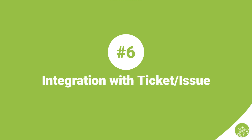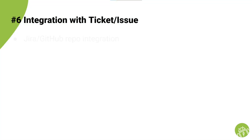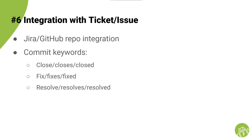Number six: integration with tickets and issues. GitHub issues or Jira tickets come with repo integration, which means you can refer to their IDs and they get informed which commit is related to the issue or ticket. You can also go further with integration and use keywords like 'fix' or 'close' to close an issue or move a ticket forward to the next stage in the workflow.